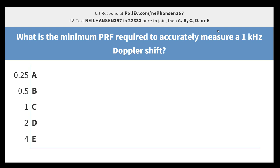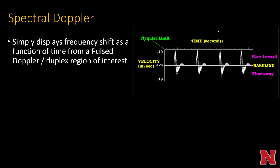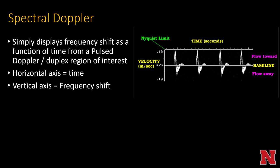The minimum PRF required to accurately measure a 1 kHz Doppler shift is double the maximum Doppler frequency shift. Spectral Doppler simply displays frequency shift as a function of time from a pulse Doppler duplex region of interest. Flow toward the transducer is displayed above the baseline, flow away from the transducer is below the baseline, and the horizontal axis represents time.